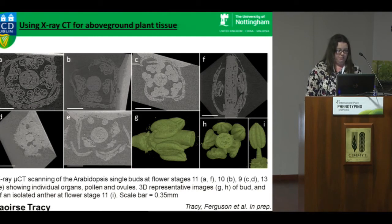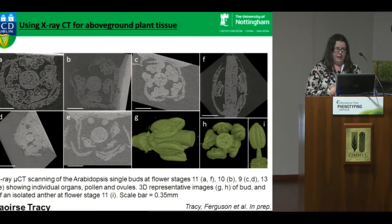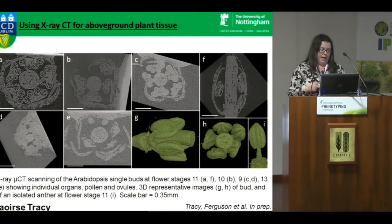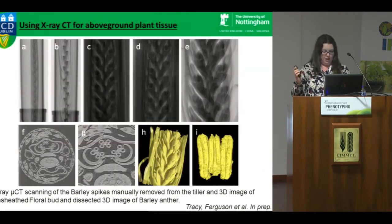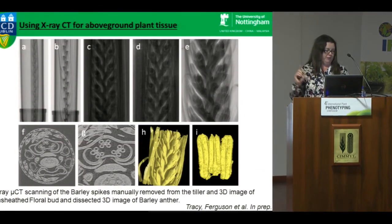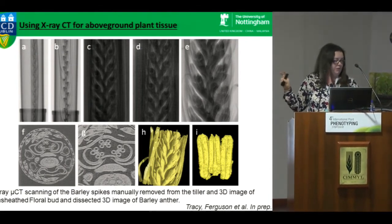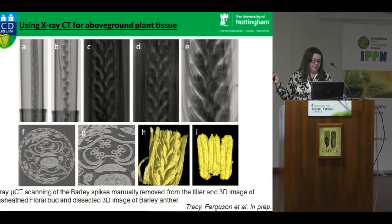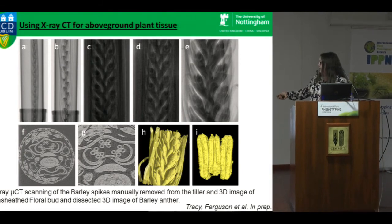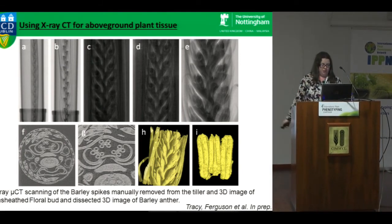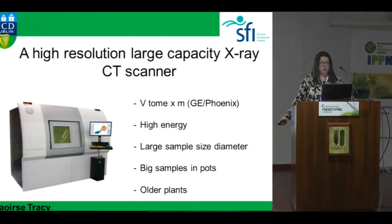One of the first root segmentations from this project shows a root depth of 80 centimeters. Looking beyond roots, one of the last experiments at Nottingham — with Alison Ferguson, Zoe Wilson, and Jose Fernandez — used X-ray CT to look at floral staging in Arabidopsis, to avoid having to dissect Arabidopsis buds. We also looked at barley spikes: you simply put the barley tiller in the CT scanner, turn the X-rays on to get a radiograph, and take measurements to see exactly what stage it's at without having to unsheathe the tiller.